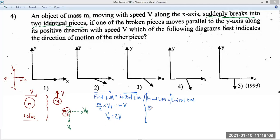What is the final linear momentum in the upward direction? That will be M by 2 V minus M by 2 Vv. Vv is the vertical velocity component of the other piece after the explosion.